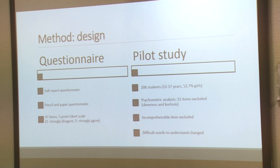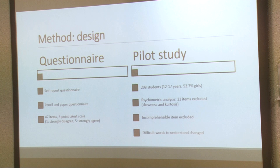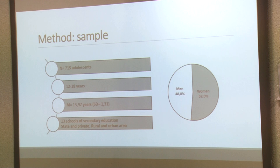We went to a high school with 280 students from 12 to 17 years old in secondary education and conducted this first pilot study with the questionnaire. We conducted a psychometric analysis and had to exclude 11 items because they had extreme values of skewness and kurtosis. We also had to exclude another item because it was incomprehensible — students weren't able to understand it. Finally, we changed some difficult words such as 'smartphone,' which they didn't know, replacing it with 'mobile phone.'